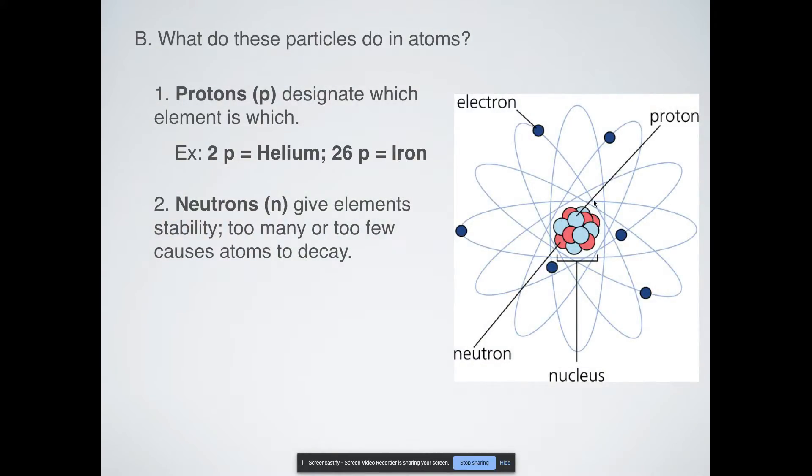Neutrons give elements stability. If you have too many of them or too few of them it can cause an atom to decay, which we'll talk about in another lesson in a little bit in this unit. A good example of that would be carbon is totally stable with six neutrons. But when you have eight neutrons in your carbon it will start to decay through beta decay.